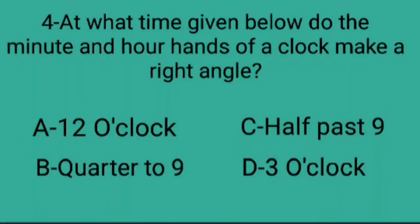Q4. At what time given below do the minute and hour hands of a clock make a right angle? A. 12 o'clock, B. Quarter to 9, C. Half past 9, D. 3 o'clock.